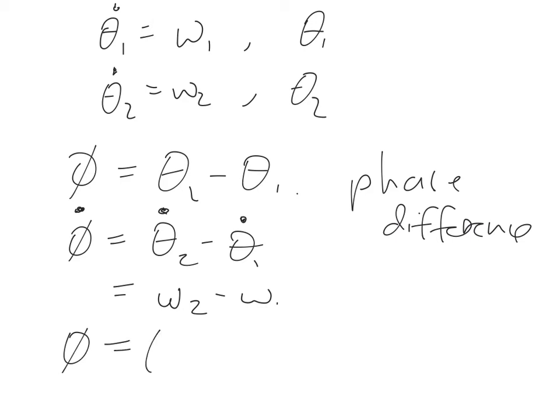And this is straightforward to solve. Phi equals omega 2 minus omega 1 times time plus the initial phase difference.